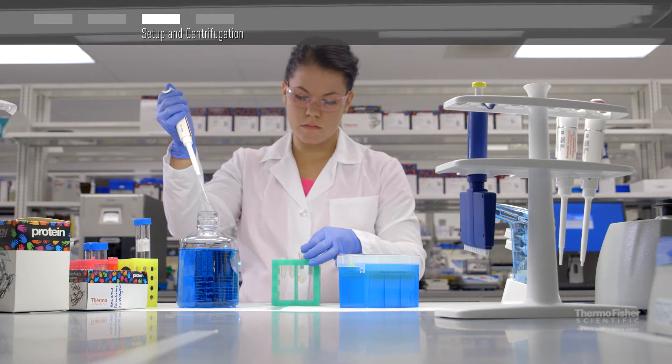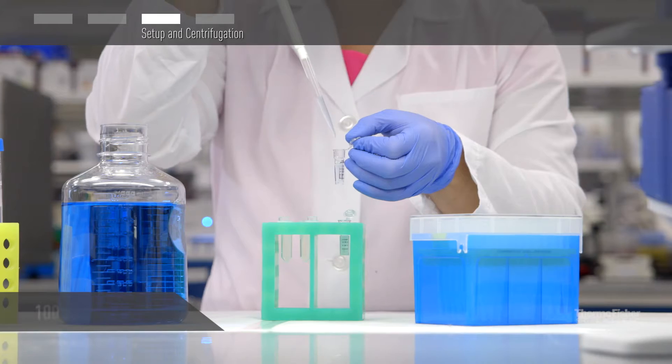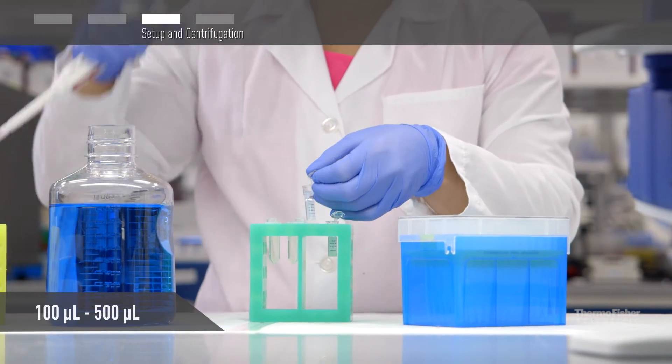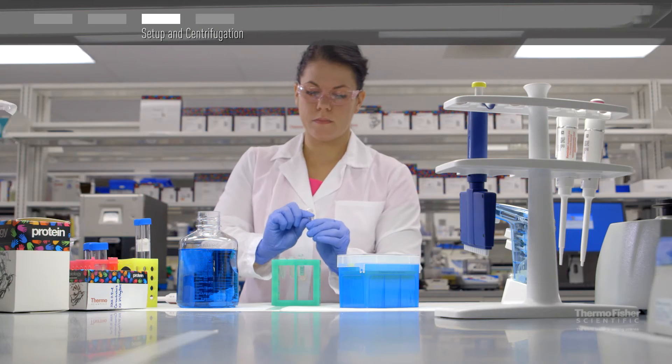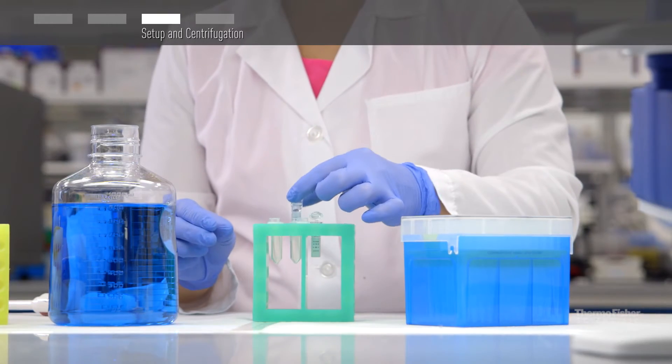To concentrate your protein or proteins of interest, place between 100 microliters and 500 microliters of sample into the sample chamber. Cap and insert the chamber into a collection tube.